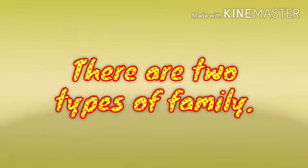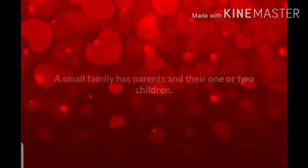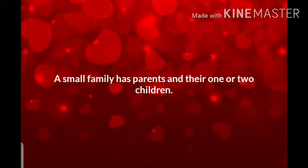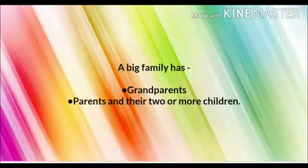There are two types of family. Number 1: Small Family. A small family has parents and their one or two children. Number 2: Big Family. A big family has grandparents, parents, and their two or more children.